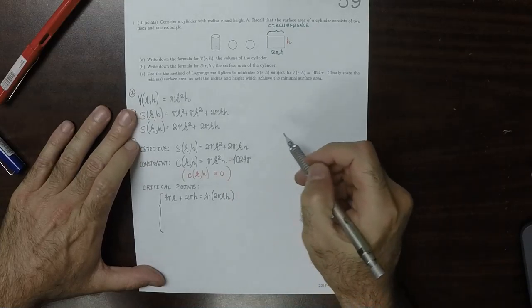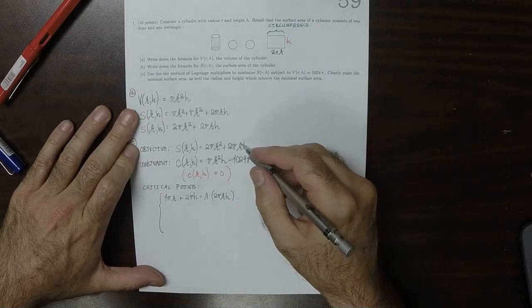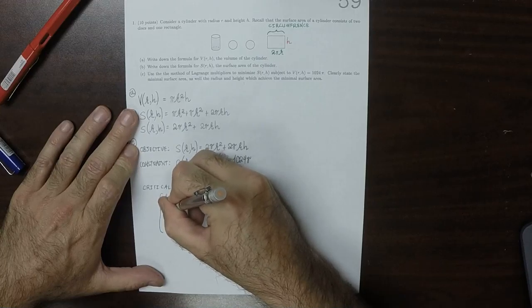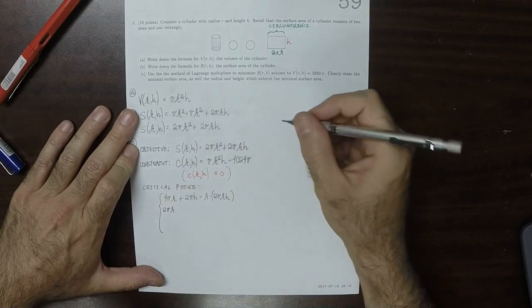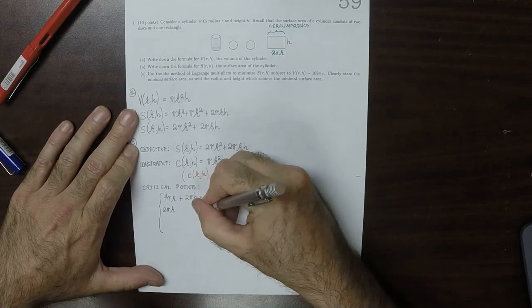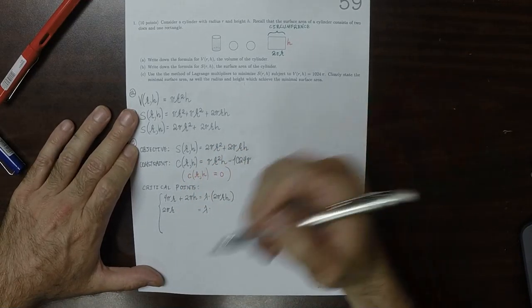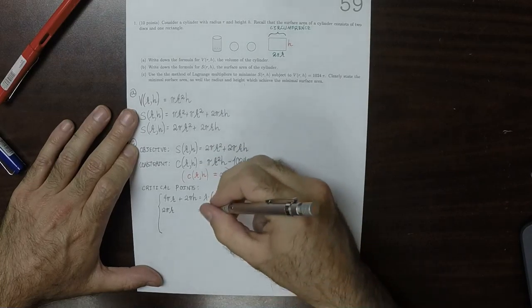So the h partial of the objective would be 2 pi r and that is equal to lambda multiplied by the h partial of this times pi r squared.